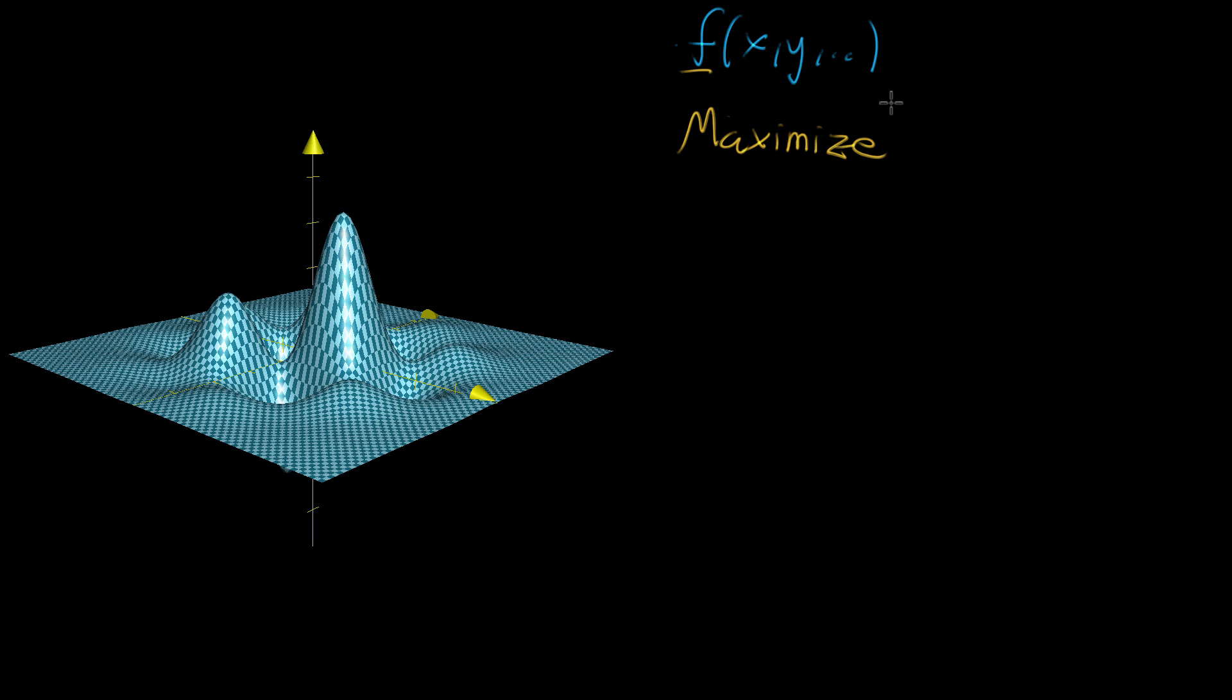This actually comes up all the time in practice because usually when you're dealing with a multivariable function, it's not just for fun and abstract symbols, it actually represents something. Maybe it represents profits of a company, a function where you're considering all the choices you can make, like the wages you give your employees or the prices of your goods, or the amount of debt that you raise for capital. You want to know what values should you give to those choices such that you maximize profits.